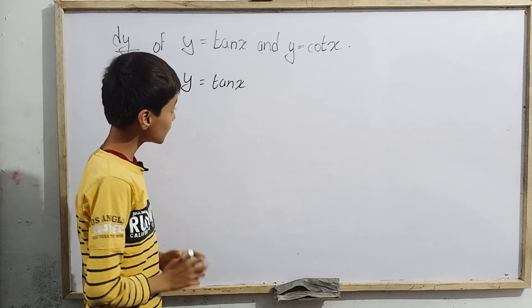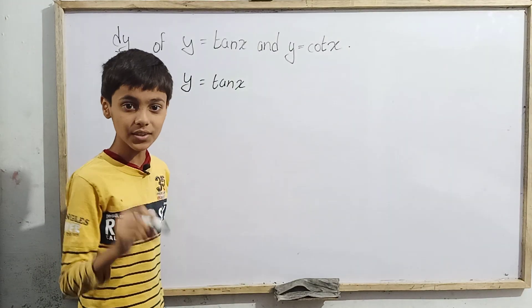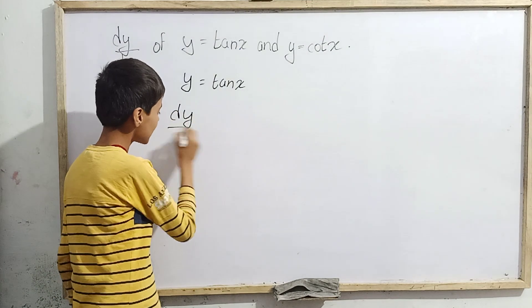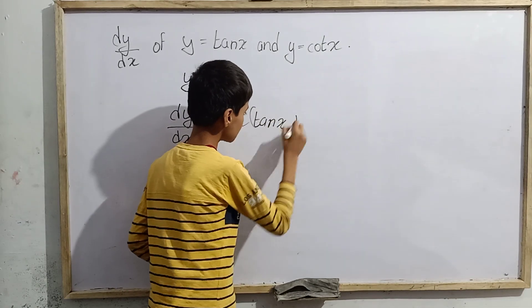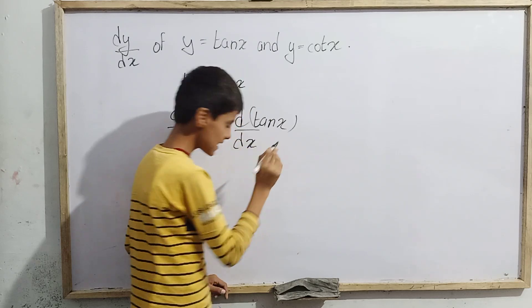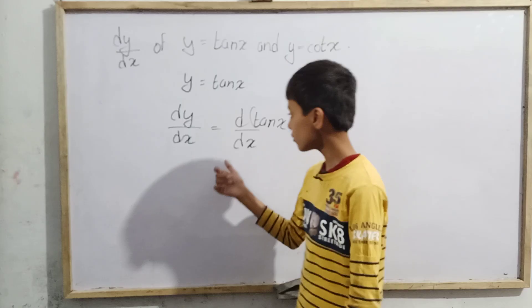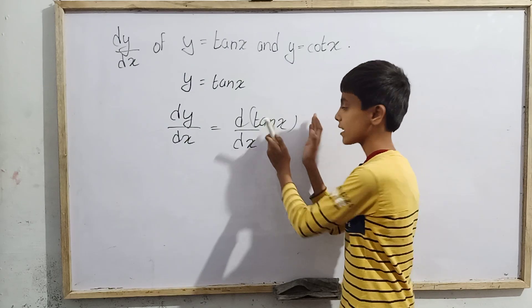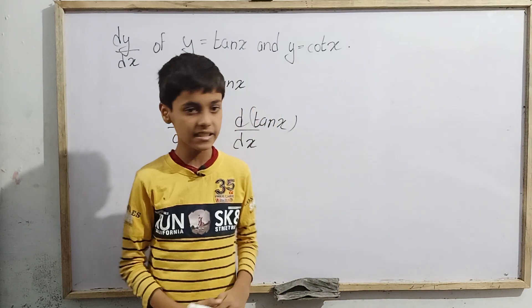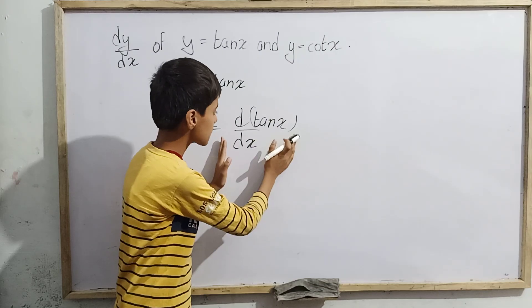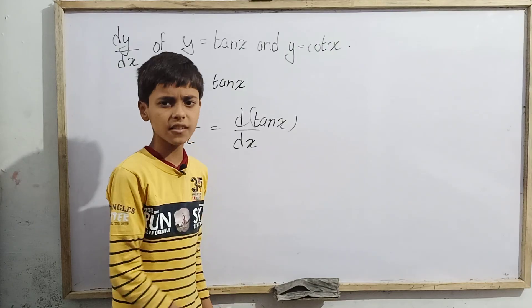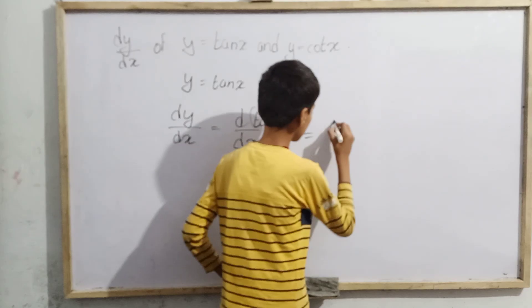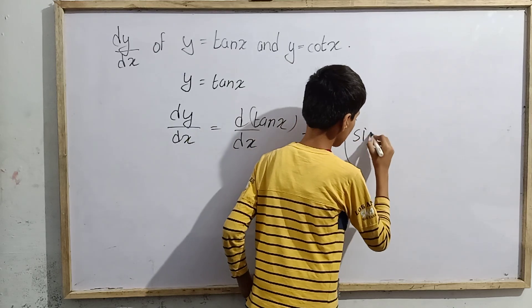First of all, we have to differentiate y equals tan x with respect to x. So here we write dy/dx equals d(tan x)/dx. Since we don't already have the value of this differentiation, we need to find it. The formula we require is that tan x equals sin x by cos x.